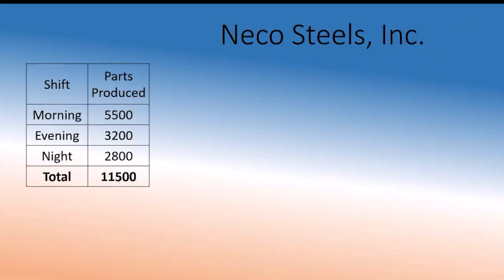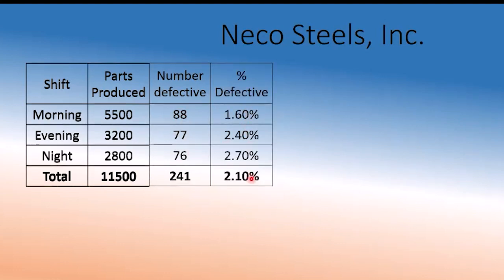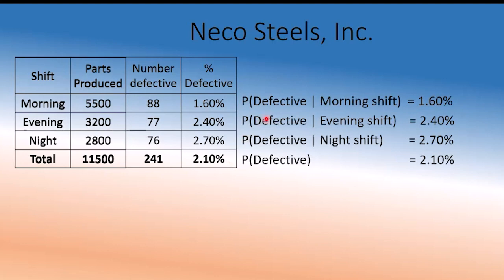Let's suppose we have a company called Neko Steels. The three shifts produce parts — those are the total parts produced — and then we have defective parts produced by each shift, and here is the percentage defective. So: defective given morning shift is 1.6%, given evening shift 2.4%, night shift 2.7%, but overall defect is 2.10%. They are not equal, which means shift matters. Morning shift parts are not as defective as night shift parts.